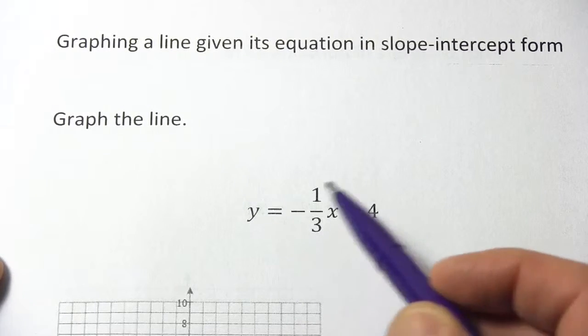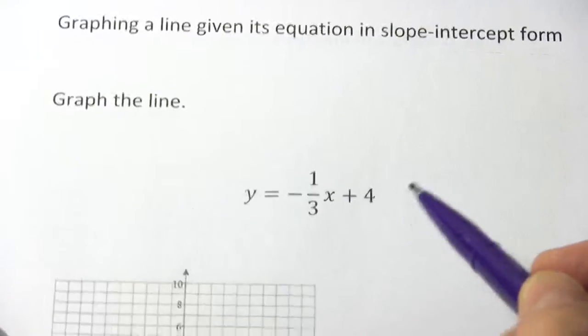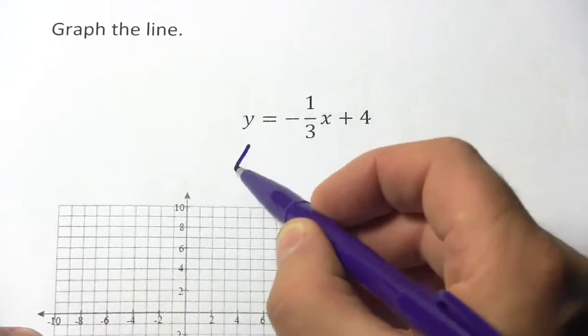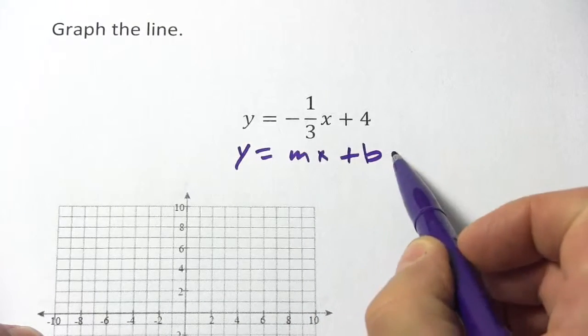Here we have an equation in slope-intercept form and we need to graph the line of that equation. And remember slope-intercept form is y equals mx plus b.